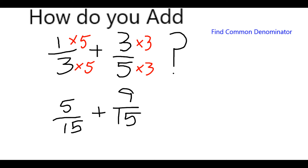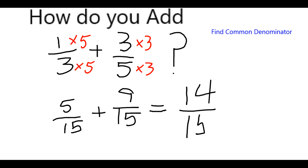Now I can add those together because they have the same denominator. They're fifteenth-size pieces. 5 plus 9 is going to give me a total of 14 out of 15. So very close to 1, but not quite there. So I got the common denominator, added my numerators, which are the top part here.